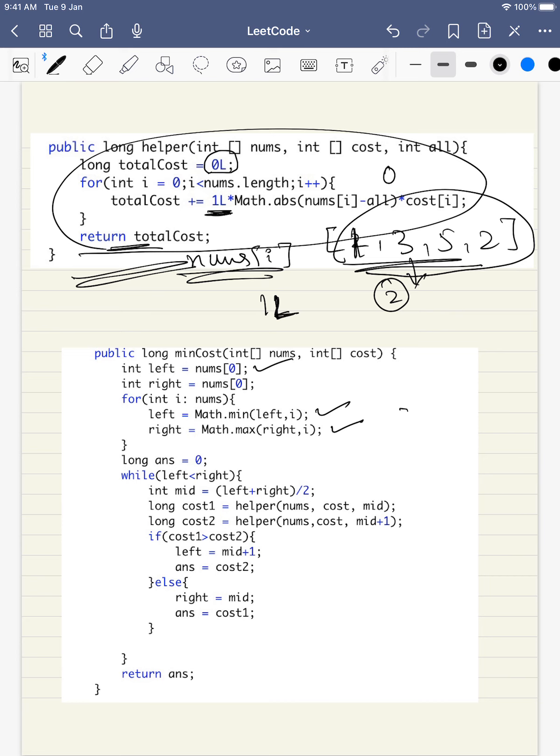Then we will be calculating the mid value at every step. In this case, the first mid value will be 3. We will be finding the cost of both 3 and the next number. And what we will be doing is eliminating the search space, either the right part or the left part.